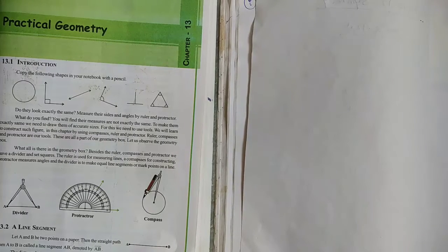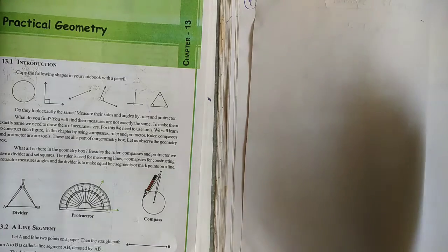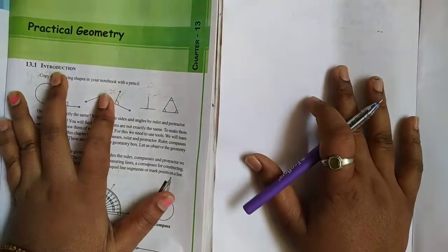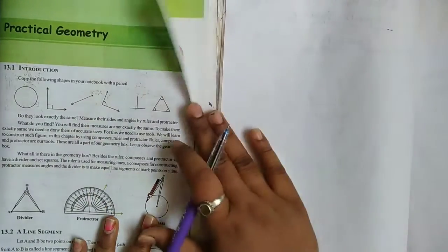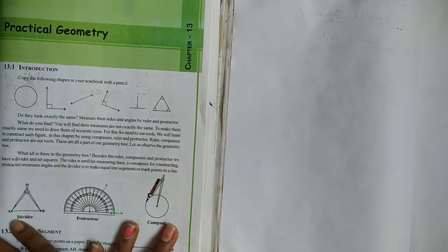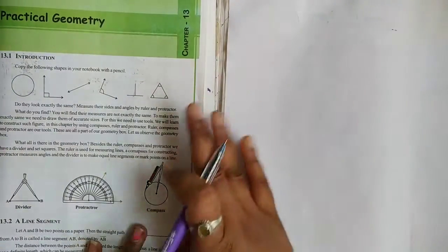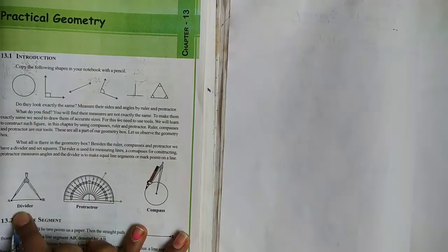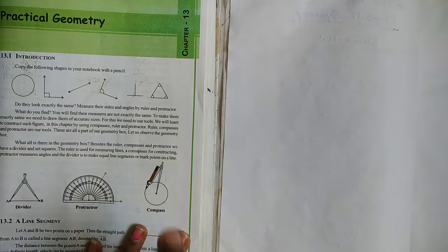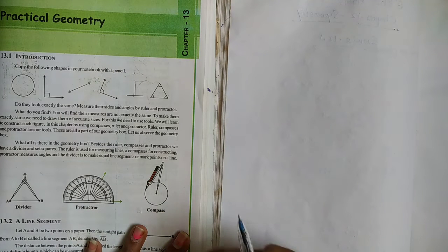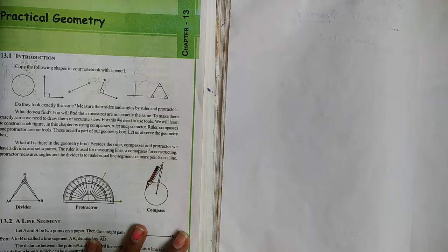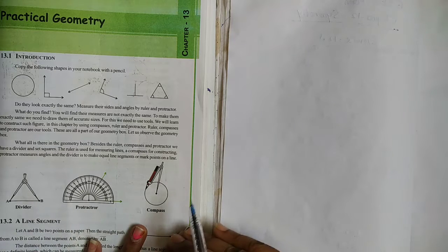Hi, welcome to my channel. Today I am going to talk about practical geometry in 6th class Maths. Practical geometry involves tools called divider, protractor, and compass. In the 5th class, we will explain the divider, protractor, and compass.